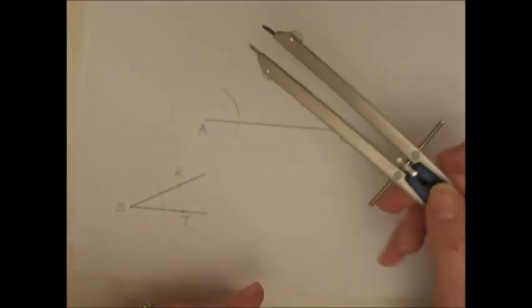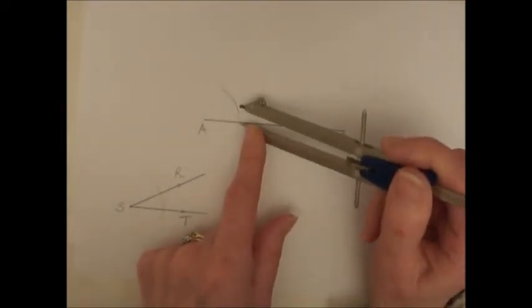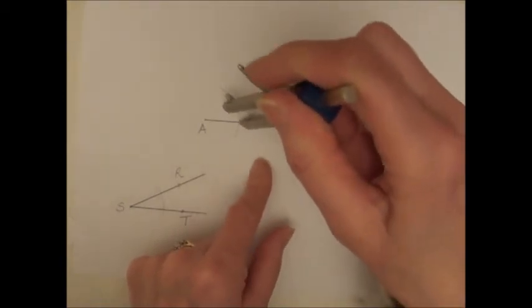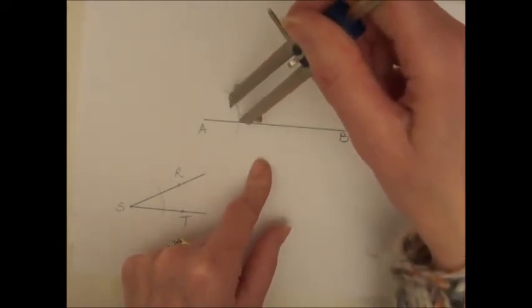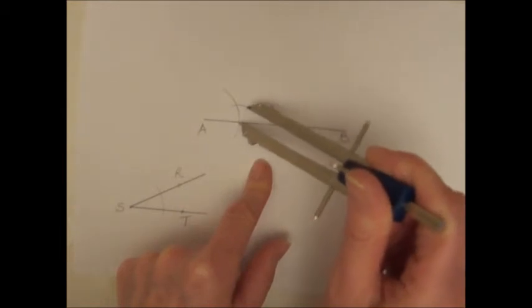I take that same radius width and put the point of the compass where the arc cut AB, then spin around and cut the other arc.